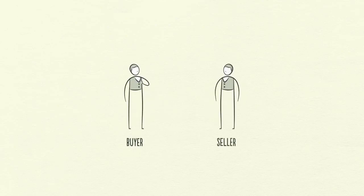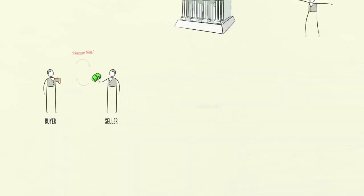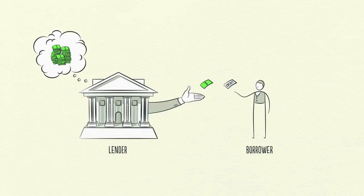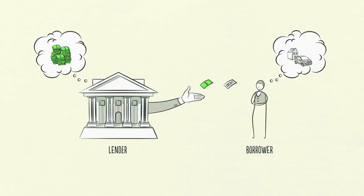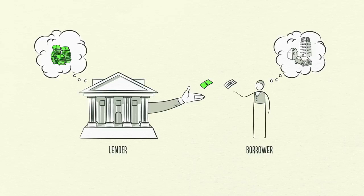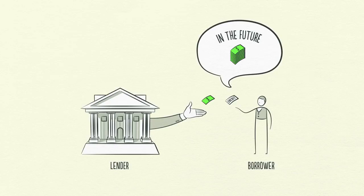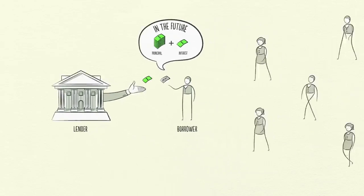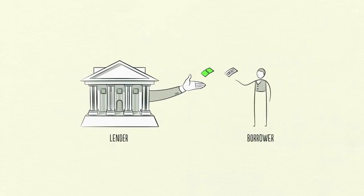Just like buyers and sellers go to the market to make transactions, so do lenders and borrowers. Lenders usually want to make their money into more money. And borrowers usually want to buy something they can't afford, like a house or a car. Or they want to invest in something like starting a business. Credit can help both lenders and borrowers get what they want. Borrowers promise to repay the amount they borrow, called principal, plus an additional amount, called interest. When interest rates are high, there is less borrowing because it's expensive. When interest rates are low, borrowing increases because it's cheaper. When borrowers promise to repay and lenders believe them, credit is created.